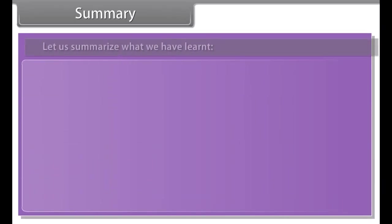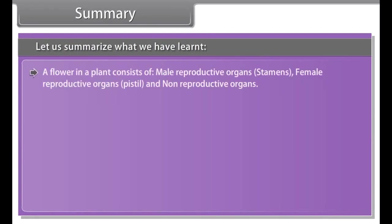Did you know? Pollen tube production can be artificially provoked by inserting pollen grains into a sugary solution with a concentration between 2% and 20%.